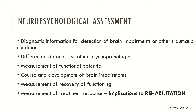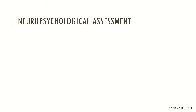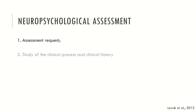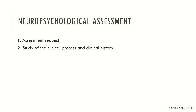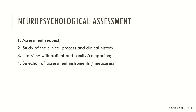Now I'll describe how the neuropsychological assessment process tends to unfold. First, there is an assessment request. Second, there is the study of the clinical process and clinical history. Third, there is an interview with the patient and family or companion if required. Fourth, there is a selection of the assessment instruments that the clinical neuropsychologist needs to use — including cognitive screening, neuropsychological batteries or specific tests for other symptomatological conditions.